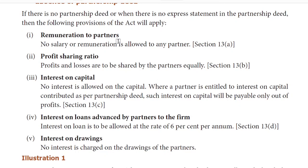First, remuneration to partners. Usually a partnership deed will mention remuneration. In case one partner has a salary, it will be mentioned in the partnership deed. But as per the Indian Partnership Act, no partner is entitled to receive salary or remuneration. Second, profit sharing ratio. Profits and losses are to be shared by the partners equally. Third, interest on capital. No interest is allowed on the capital.